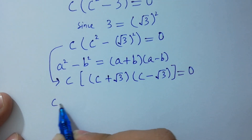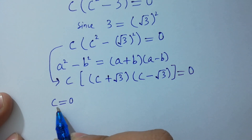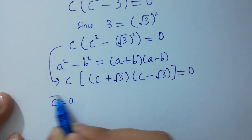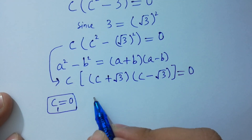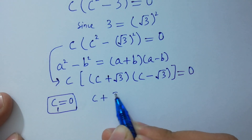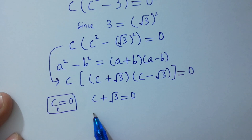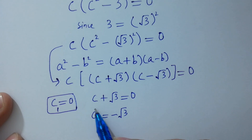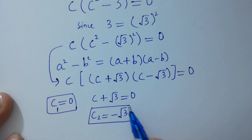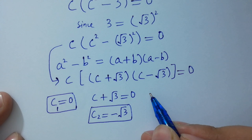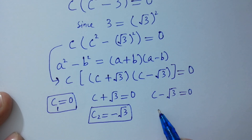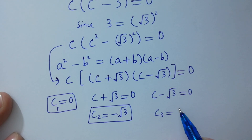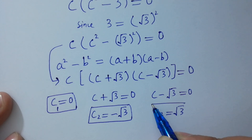Setting each factor to zero: c equal to 0, or c plus square root of 3 equal to 0, or c minus square root of 3 equal to 0. So c3 is equal to plus square root of 3 — that is the third solution.